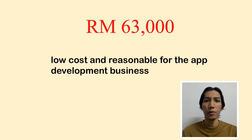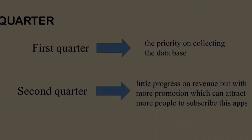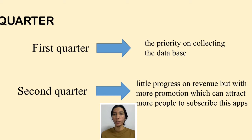So, how does the application work? It is really worth spending this amount on this app. We allow our business to grow into three quarters with six months per quarter. For the first quarter, we are not focusing on revenue but putting priority on collecting the database — the type of patient, type of disease, how to cure, and the list of medication.